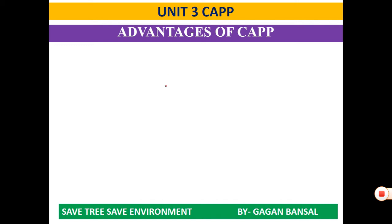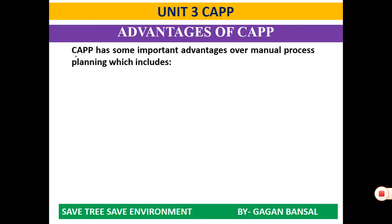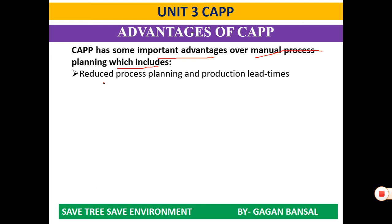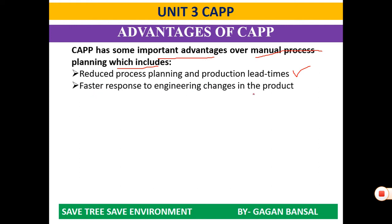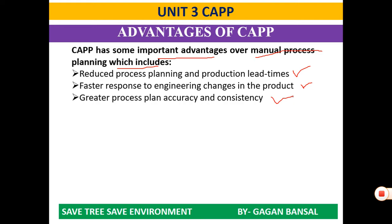Advantages of computer-aided process planning include several factors. CAPP has important advantages over manual process planning, which includes: number one, reduced process planning and production lead time — with CAPP, the planning time and production lead time are both reduced. Faster response to engineering changes in the product can easily be achieved. Greater process plan accuracy as well as consistency, since accuracy and consistency are very high compared to manual process planning, even at repetitive tasks.